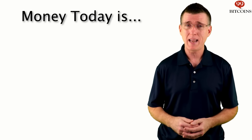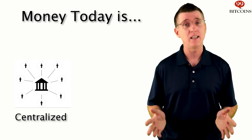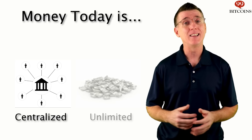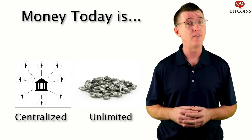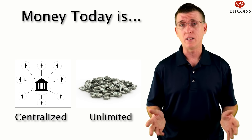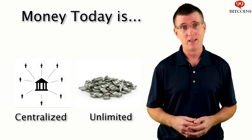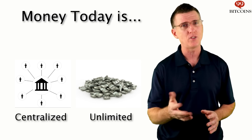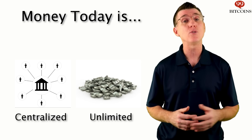Fiat money has two main drawbacks. One, it is centralized — you have a central authority that controls and issues it, in this case the government or central bank. And two, it is not limited by quantity. The government or central bank can print as much as they want and inflate the money supply on the market. The problem with printing money is that because you're flooding the market with more money, the value of each dollar drops, so your own money is worth less. When you see prices rising throughout the years, it's not necessarily that prices are rising as much as that the purchasing power of your money is dropping. You need more dollars to buy something that used to cost less.